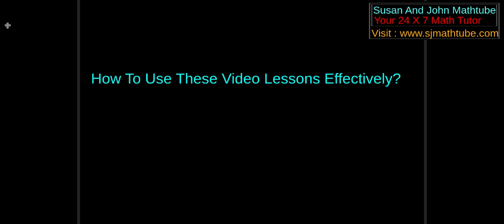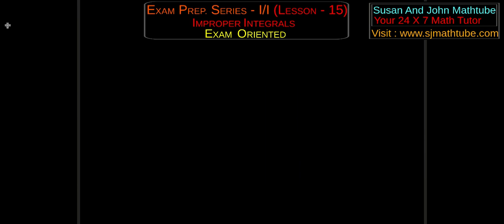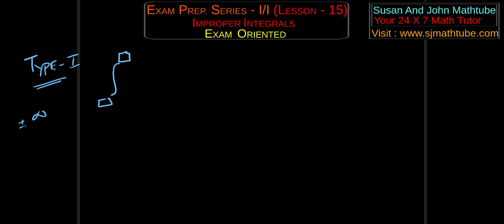As always, the most important 5 points — please try to recollect everything. We learned about Type 1 improper integrals. Type 1 improper integral means either the lower limit or the upper limit will be plus or minus infinity. So by just looking at the limits you will be able to identify Type 1 improper integrals.